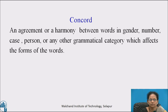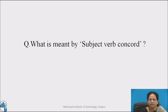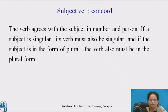You may have heard the word concord in English grammar. It means an agreement or harmony between words in gender, number, case, person, or any other grammatical category which affects the form of the words. Subject-verb concord means the verb agrees with the subject in number and person. If a subject is singular, its verb must also be singular. And if the subject is plural, the verb must also be in plural form.